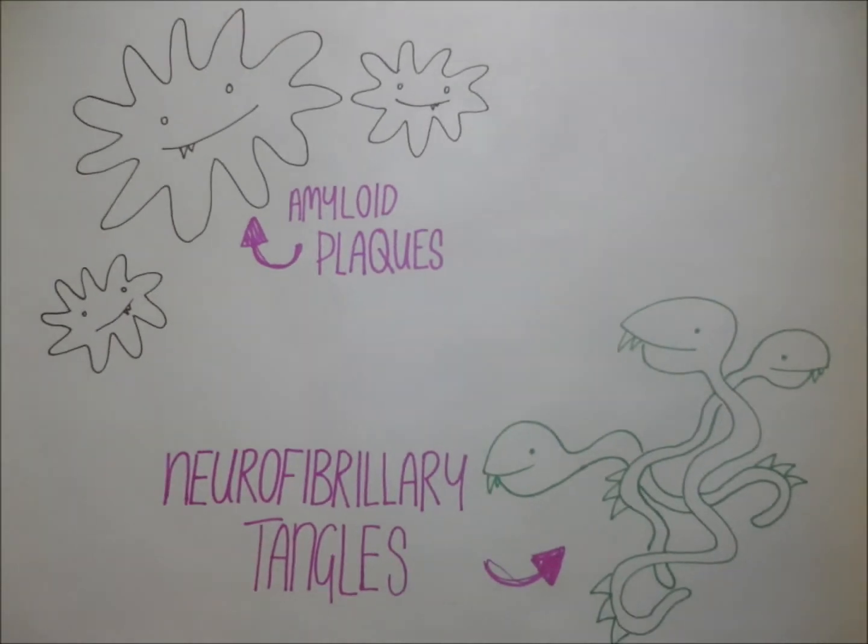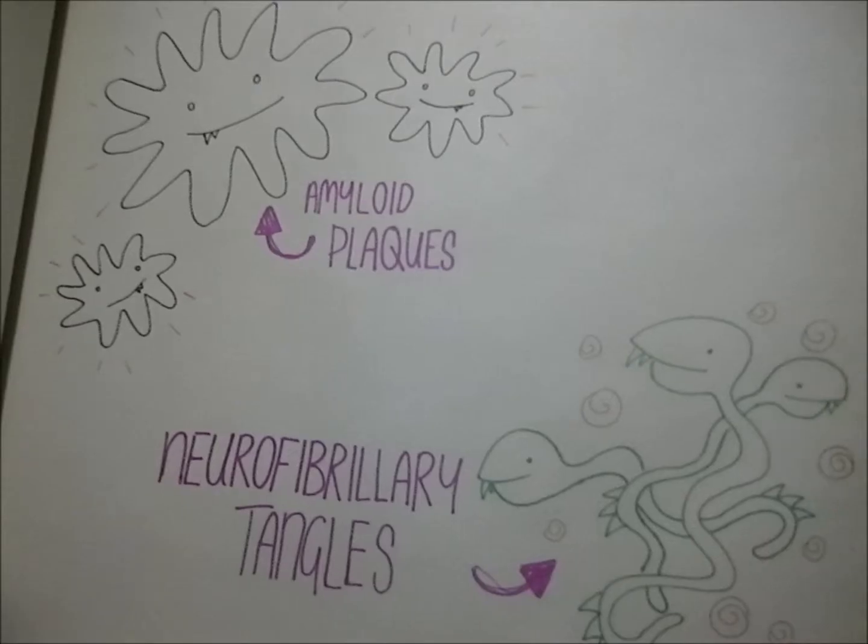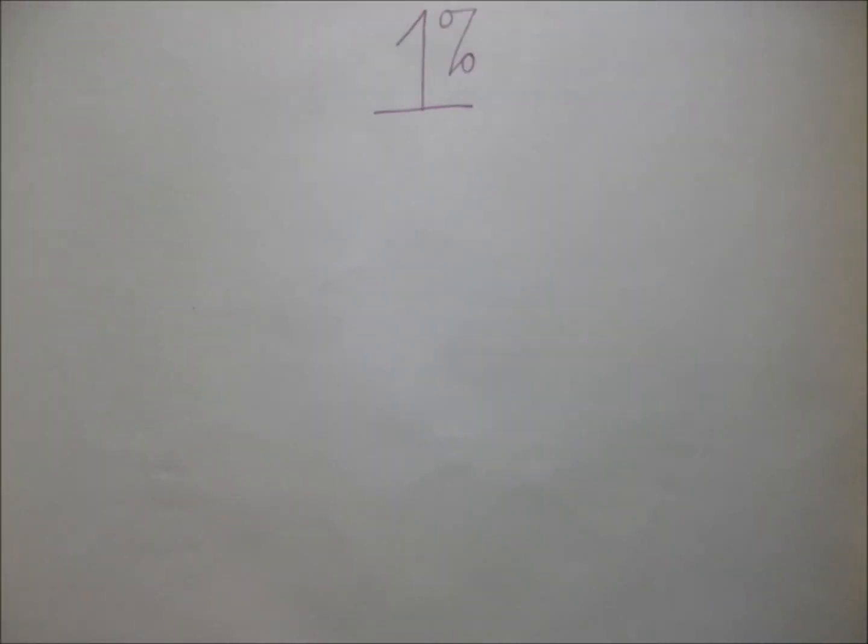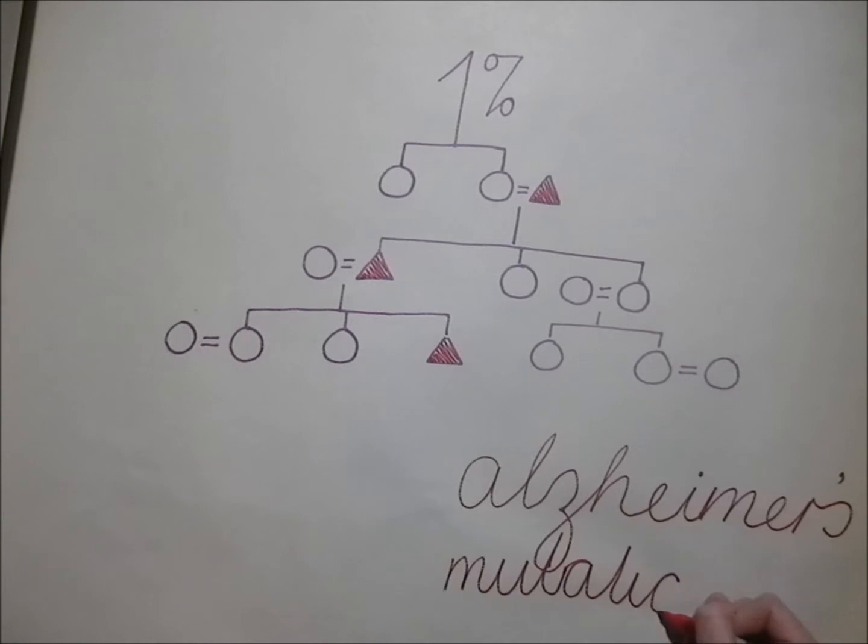The amyloid plaques are caused when the beta-amyloid precursor protein produces a defective form of beta-amyloid peptide. The hereditary version of this disease makes up only 1% of Alzheimer's sufferers and occurs when there is a mutation of the gene that expresses the beta-amyloid precursor protein.